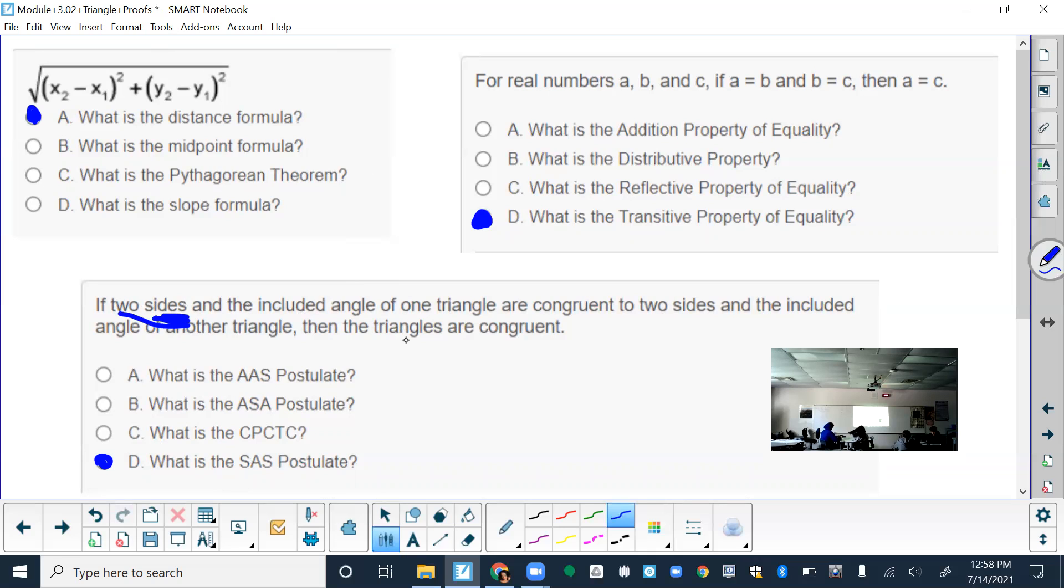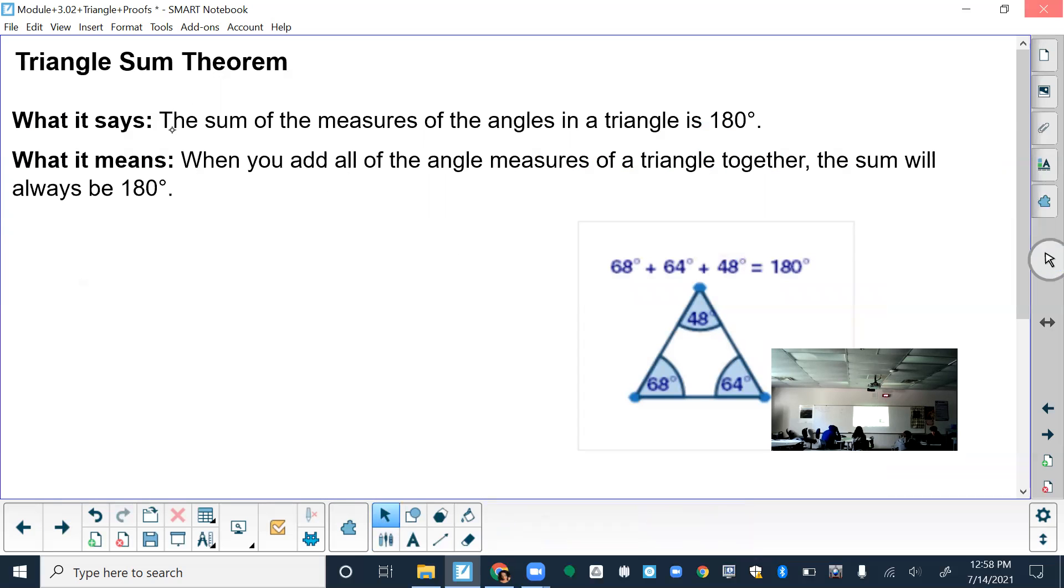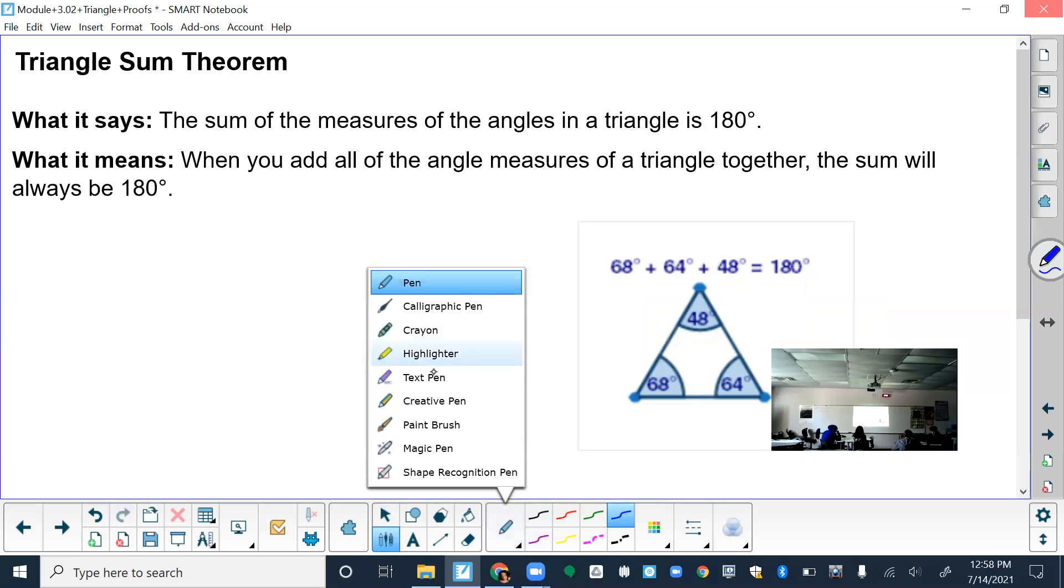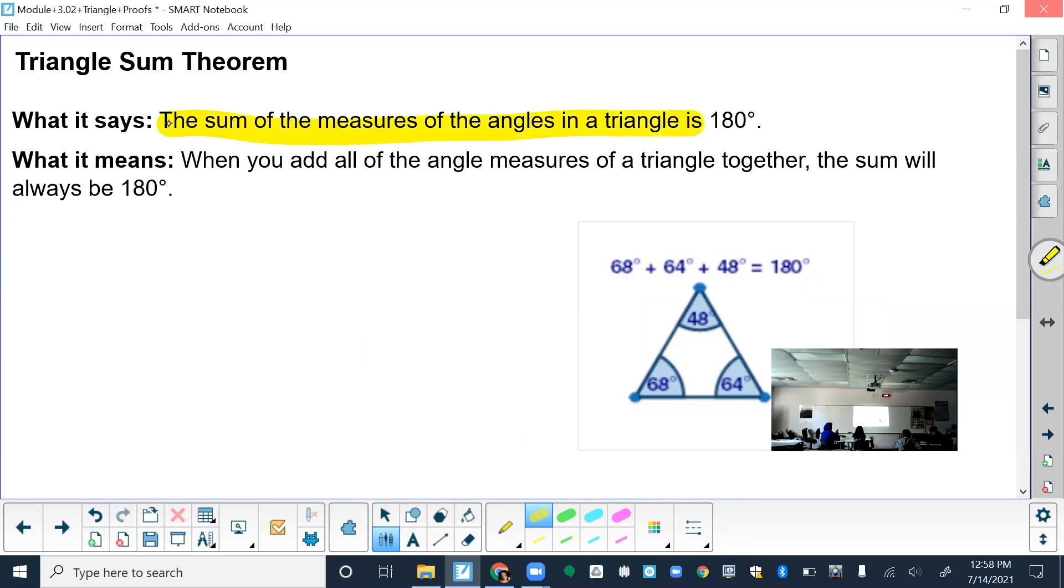Now we have triangle sum theorem. We have the sum of the measures of the angles in a triangle is 180 degrees. That's the triangle sum theorem. All the angles of any triangle, internally at least, will equal 180 degrees.